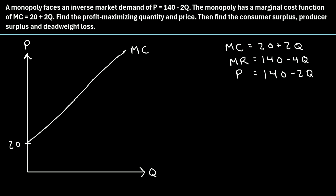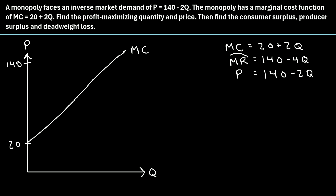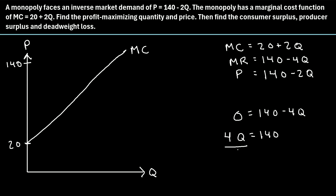Next, graph the marginal revenue line MR = 140 minus 4Q. The y-intercept is 140. To find the x-intercept, set MR = 0: 0 = 140 minus 4Q, so 4Q = 140, giving Q = 35. So the marginal revenue line intersects the x-axis at Q = 35.